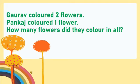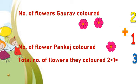How fun solving these problems! So let's solve one more problem. Gaurav colored 2 flowers. Pankaj colored 1 flower. How many flowers did they color in all? Number of flowers Gaurav colored: 2 — 1, 2. Number of flowers Pankaj colored: 1. So the total number of flowers Gaurav and Pankaj colored is 2 plus 1, that will be 3.